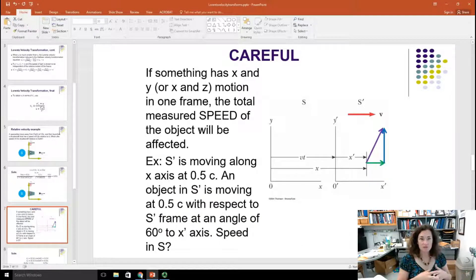Be careful. If something has X and Y, or X and Z motion in one frame, then the total measured speed of the object will be affected. So let me explain here with a little example.